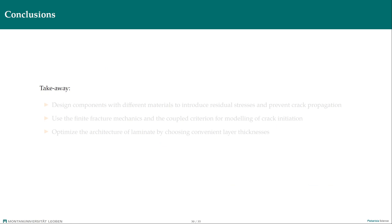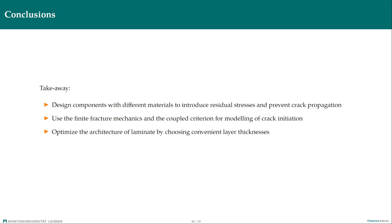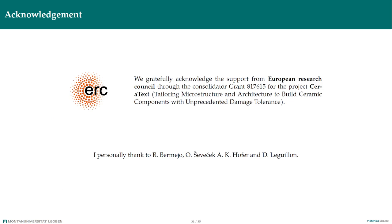To summarize what you could take away from this talk, that would be: It is possible to design components with different materials and introduce compressive residual stresses to prevent crack propagation. But when you are doing that, use the finite fracture mechanics and the coupled criterion for modeling of crack initiation. And then make some prediction of cracking and optimize the architecture of laminate by choosing convenient layer thickness, so that you not only stop the crack propagation, but you also do not introduce new type of cracks.